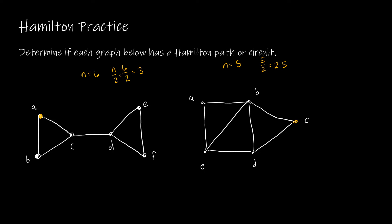So we're just going to practice on our own and determine if each graph has a Hamilton path or circuit. When doing this, we're trying to get to each vertex — we don't care about edges. Starting at A, going down to B, then over to C, then D — but there's a cut edge here. Once I traverse it I can't use it again, so whether I go to E then F or F then E, there's no way to get back to A. So while there is a Hamilton path, it is not a circuit.